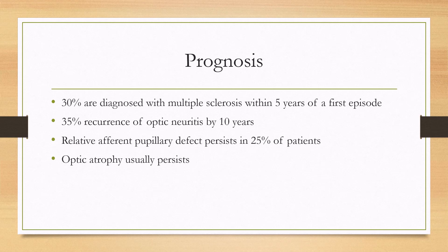There is also a significant risk of recurrence: about 35% of patients with optic neuritis will have recurrence by 10 years. Persistent defects include a relative afferent pupillary defect in about 25% of patients, and optic atrophy will usually persist as well.